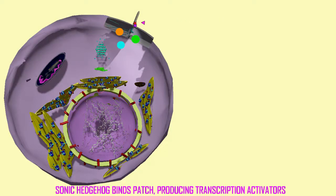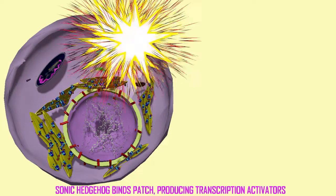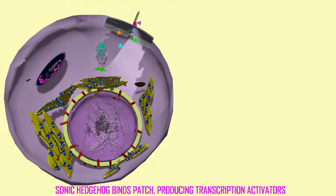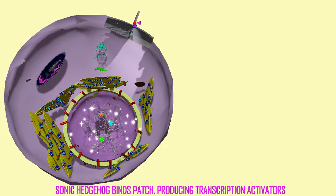For simplicity's sake, additional proteins involved have been omitted here, such as the second messengers, the kinesin Costal which allows the movement of the Gli factors, and the serine-threonine kinase known as Fused.